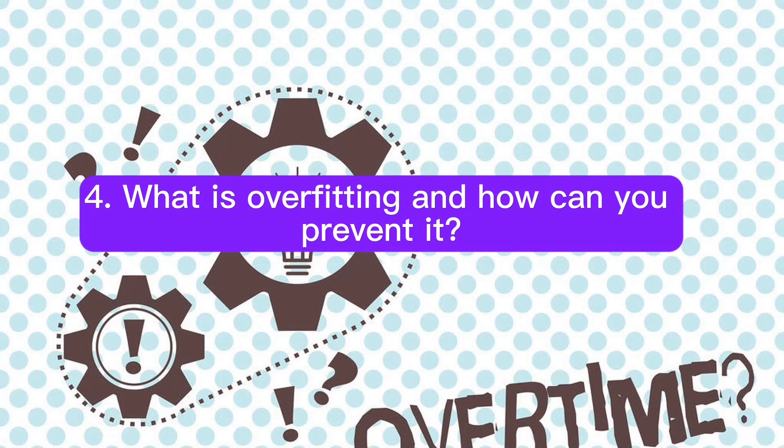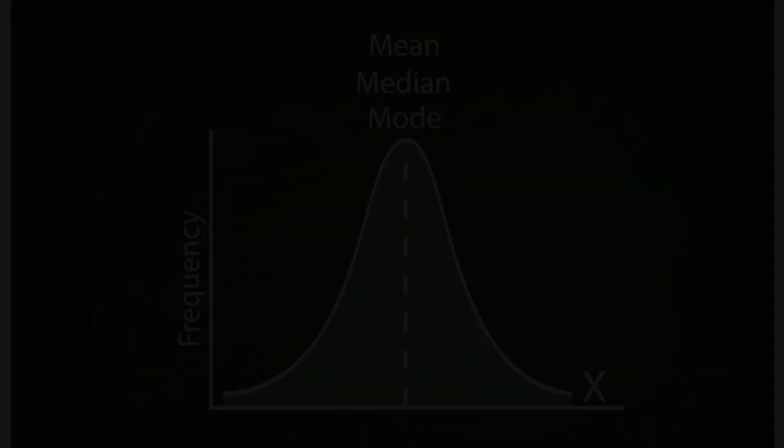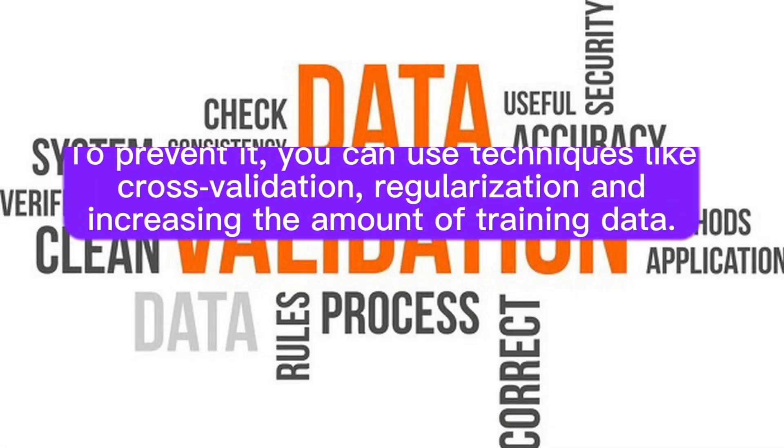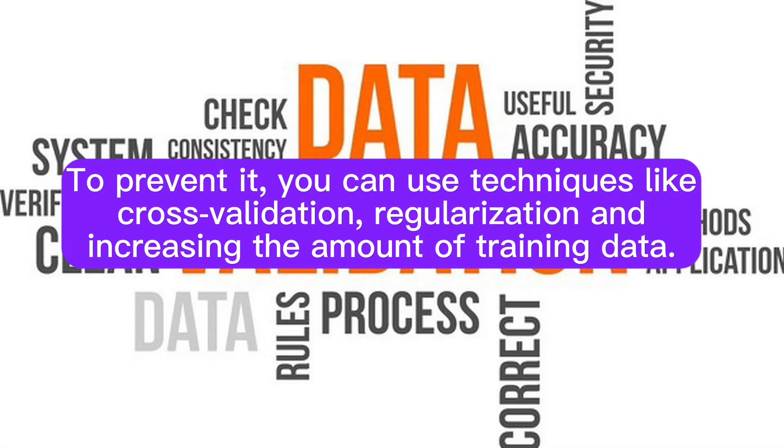Question 4: What is overfitting and how can you prevent it? Answer: Overfitting occurs when a model learns the training data too well and performs poorly on unseen data. To prevent it, you can use techniques like cross-validation, regularization, and increasing the amount of training data.